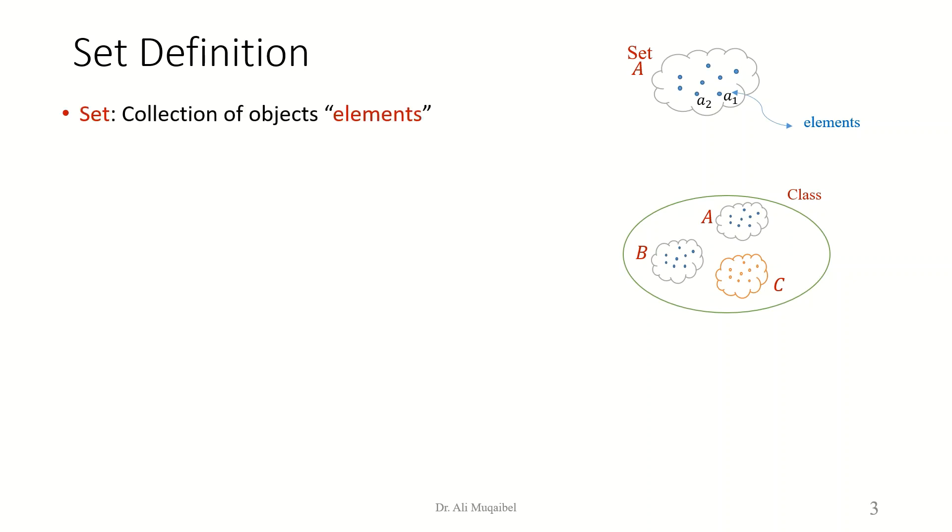So we can say formally, set is nothing but a collection of objects. These objects are called elements. And then, a class is a set of sets.